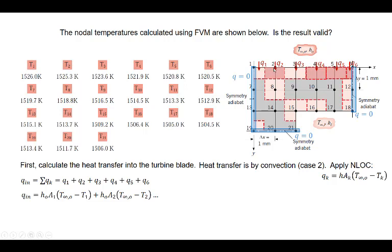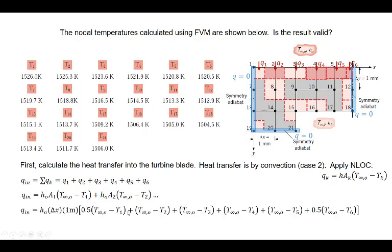Volumes 2, 3, 4, and 5 have the same heat transfer area, whereas volumes 1 and 6 have half of that area since they are half the size. We substitute the common area for volumes 2–5 and half that area for volumes 1 and 6. The area for heat transfer is the node spacing Δx times a unit depth, meaning the calculation is done on a per-unit-length basis — we calculate watts per meter of turbine blade length. The one-half factor is applied to volumes 1 and 6 to account for their half heat transfer area of Δx times 1.